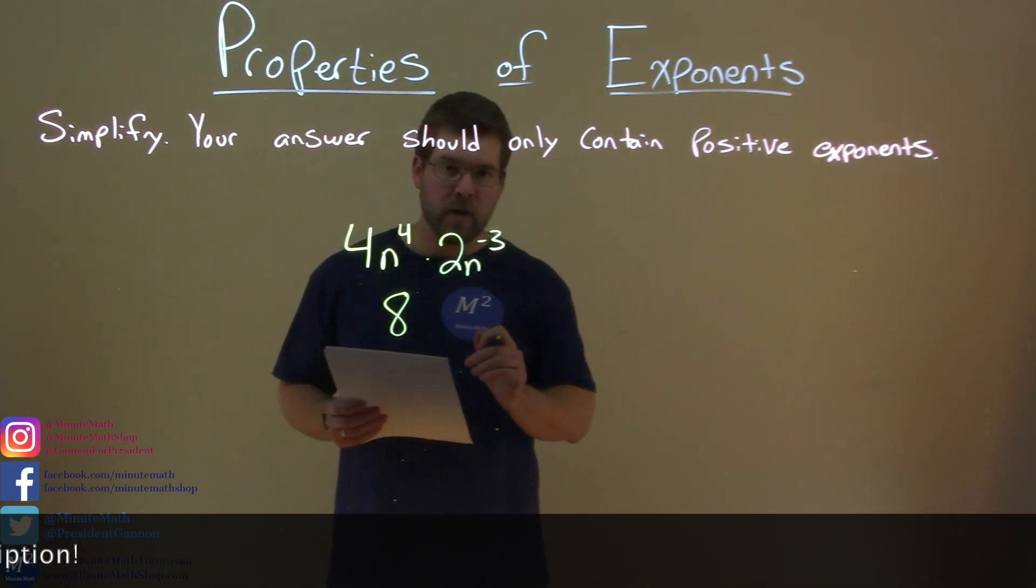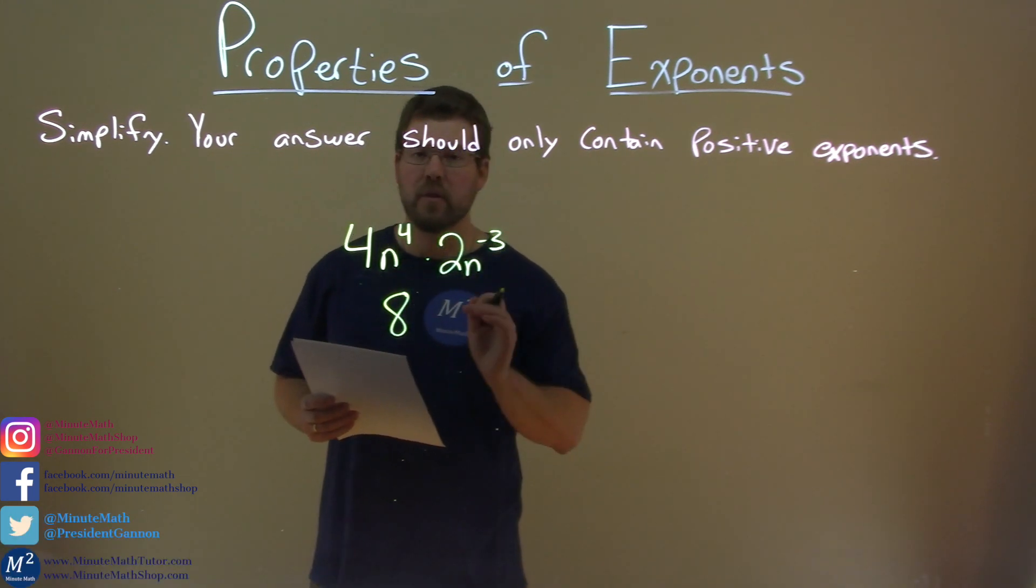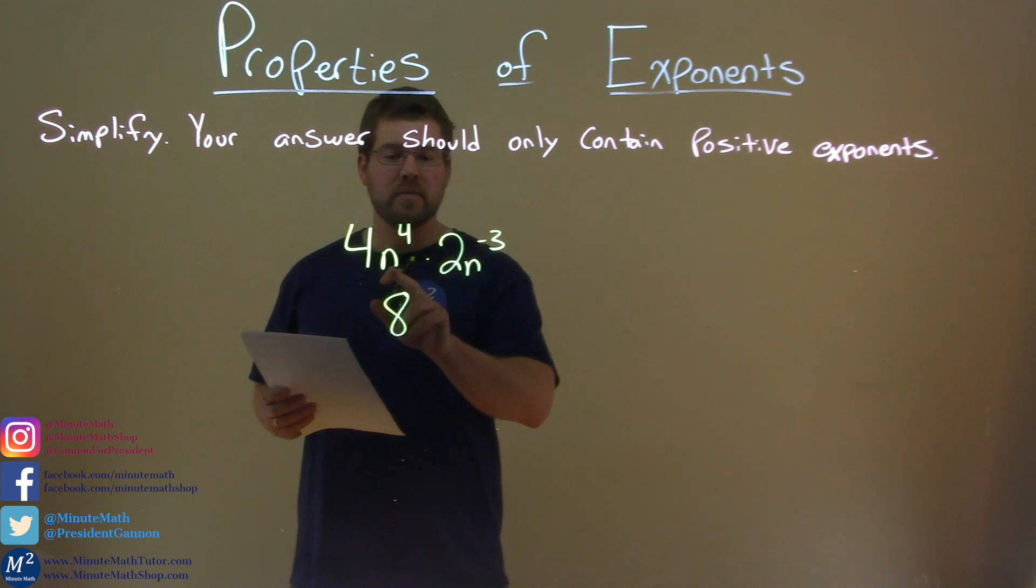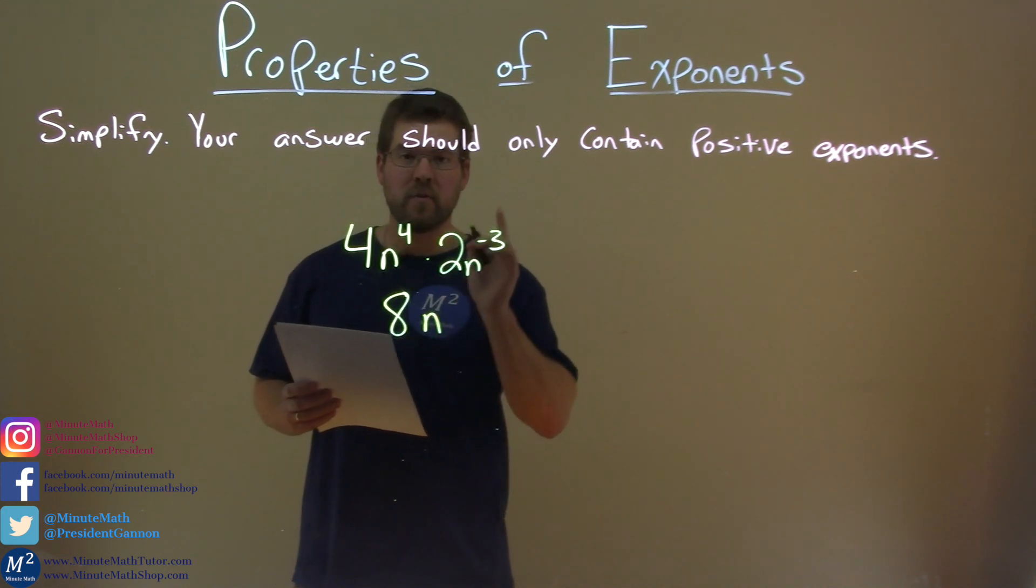Now we have our variables n to the fourth times n to the negative third power. When we have the same bases, we take the exponents, on multiplication, and we add them. So 4 plus a negative 3 is a positive 1.